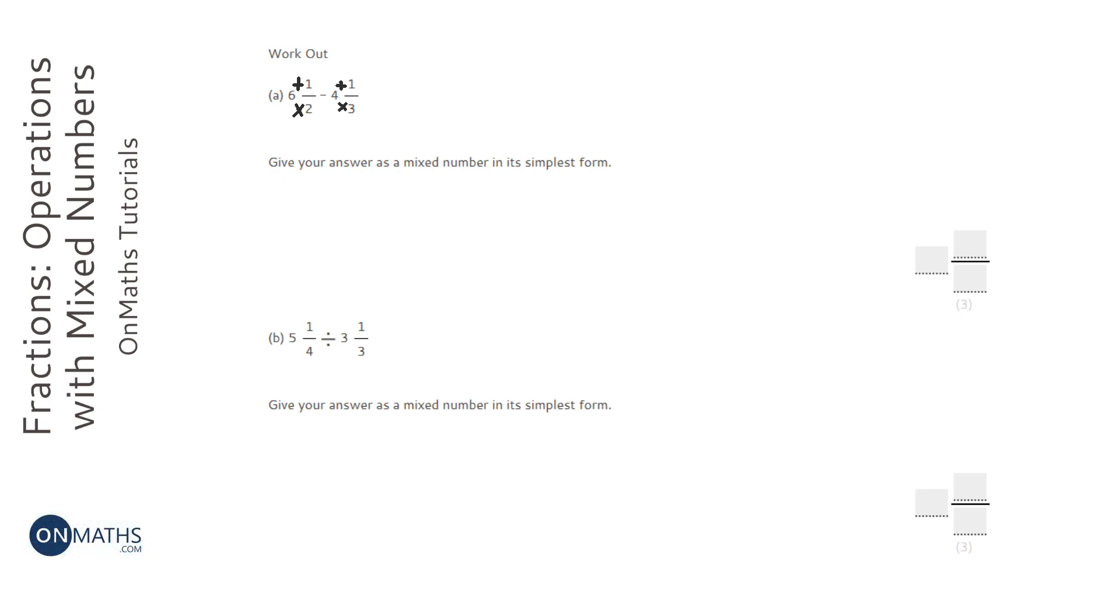So I'm going to do six times two, which is twelve, plus the one at the top, which is thirteen. And it's going to be over two. Then I'm going to do four times three, which is twelve, add to the top, which is going to be also thirteen, this time over three.